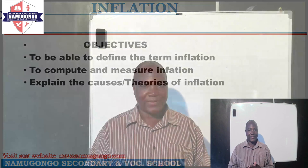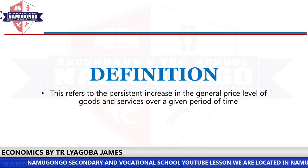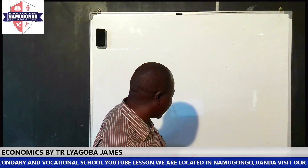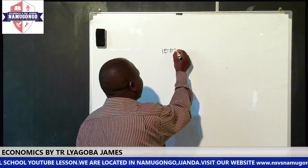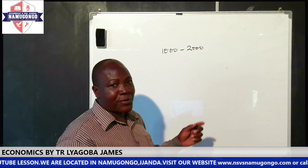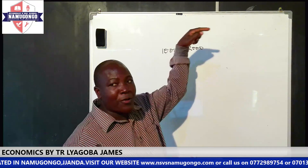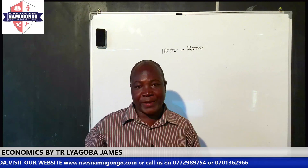We are going to look at the definition of the term inflation. Inflation refers to the persistent increase in the general price level of goods and services over a given period of time. For illustration, if prices increase over sugar from $1,000 to $2,000, this is what we are referring to as inflation — money has lost value. So if the prices for goods and services increase beyond what people expect, then we say that inflation has set in.